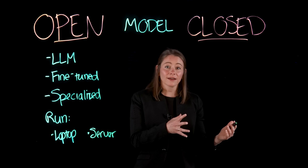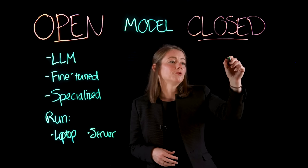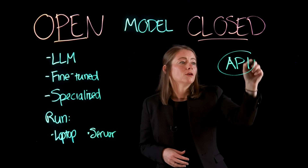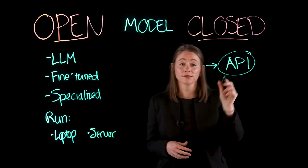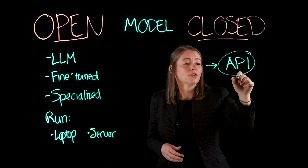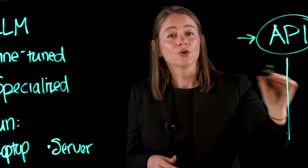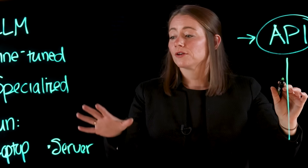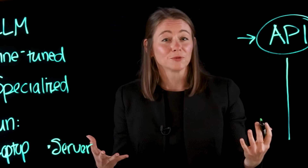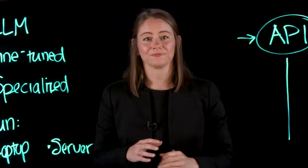On the other hand, if you're using a closed model, these are usually available via an API. You have to worry about making a call to the API, but this often means that the other layers of the stack are fully managed for you. You don't have to worry about the inference engine to run the model, including the optimizations to make it efficient, or worry about the infrastructure it runs on.